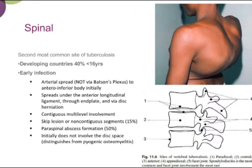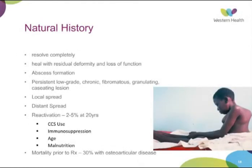Acute spinal cord injury is rare, but can result from abscess formation and pathological fractures. More chronic infections are more highly associated with spinal cord injury and Pott's disease, with bony sequestra or chronic inflammation leading to scarring and permanent neurological deficit. The natural history of TB is variable: it may resolve completely, heal with residual deformity, form quiescent abscesses, or grumble for many years. Reactivation occurs in 2% to 5% of all cases — TB can remain dormant for up to 20 years. Factors involved include corticosteroid use, immunosuppression, age, and malnutrition.